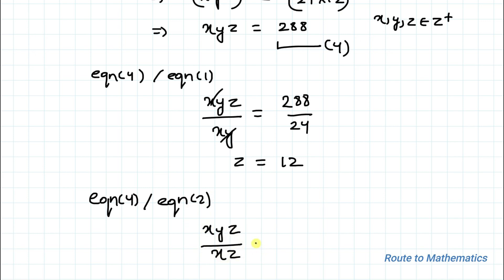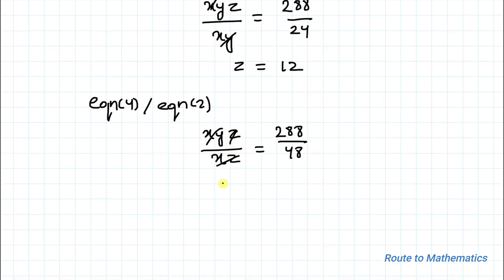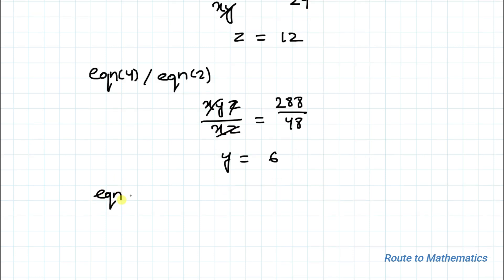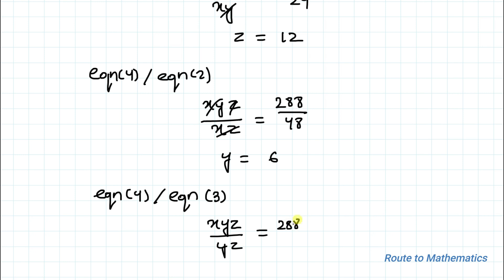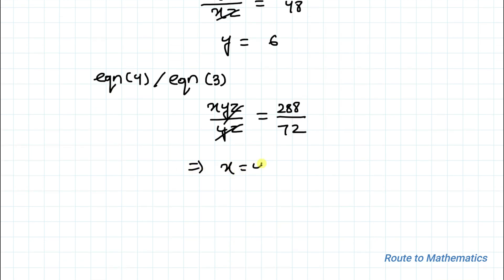Dividing equation 4 by equation 2: xyz ÷ xz = 288 ÷ 48. Here xz cancels out, so y = 6. Similarly, dividing equation 4 by equation 3: xyz ÷ yz = 288 ÷ 72. Here yz cancels out, so x = 4. So we found x = 4, y = 6, and z = 12.